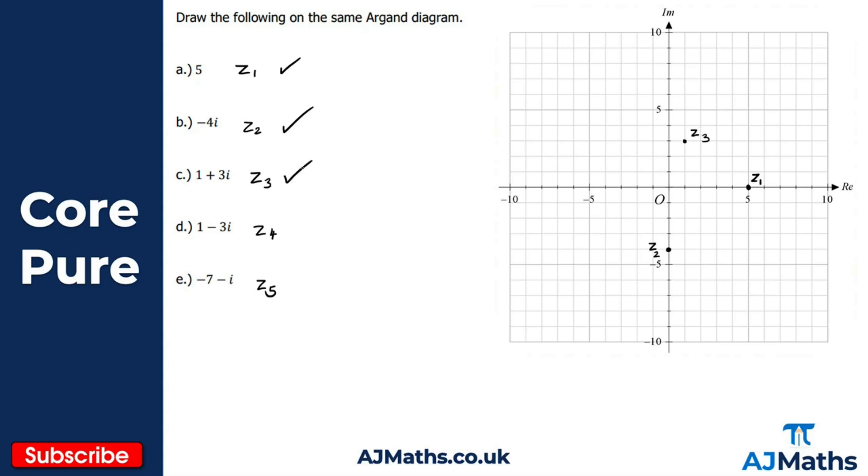For part d, we've got one minus 3i. Hopefully you notice here that c and d are what we call a complex conjugate pair: one plus 3i and one minus 3i. That's a complex conjugate. When I plot this, we have a special property. One minus 3i, so we go one unit along again, but this time we go down three units: one, two, three. We plot our point there. That's z4. When we plot a complex conjugate like this, it's simply a reflection in the real axis.